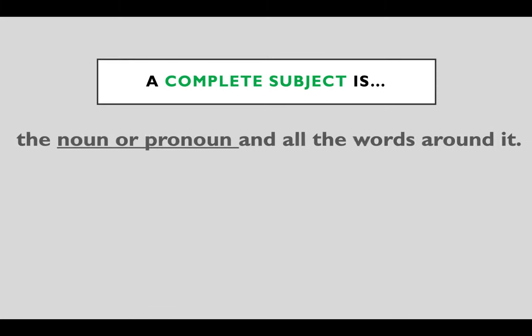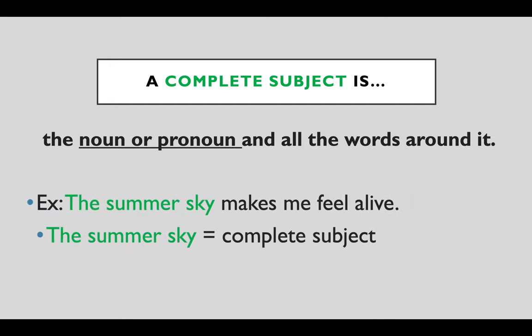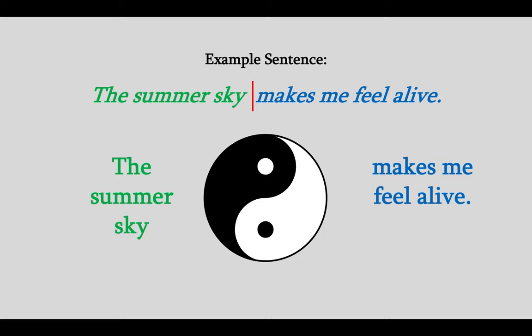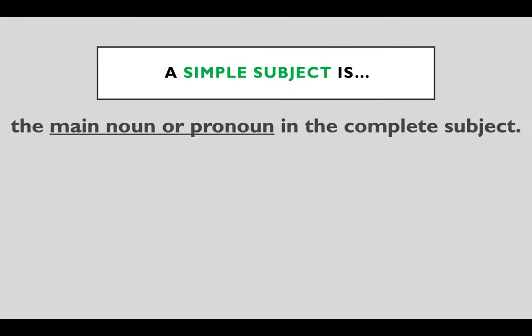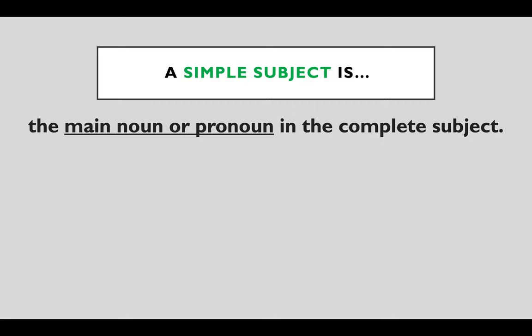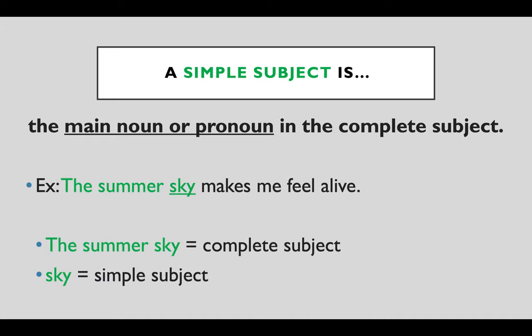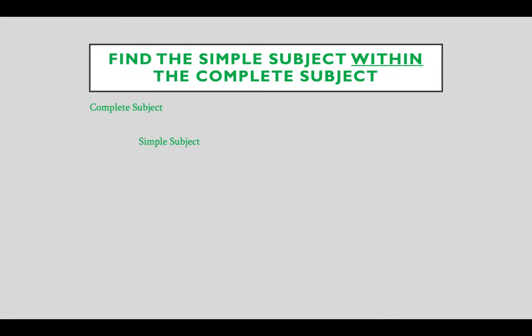A complete subject is the noun or pronoun and all the words around it. So in this case, the summer sky is the complete subject — that would be my yin. And then makes me feel alive would be my yang. So the sentence is like a yin-yang. The complete subject is the yin.